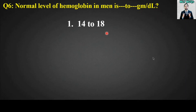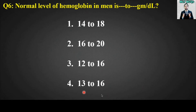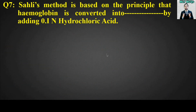MCQ number six: The normal level of hemoglobin in men is blank to blank gram per deciliter. Options are: 14 to 18, 13 to 16. The right answer is option number one — the normal level of hemoglobin in men is 14 to 18 gram per deciliter.